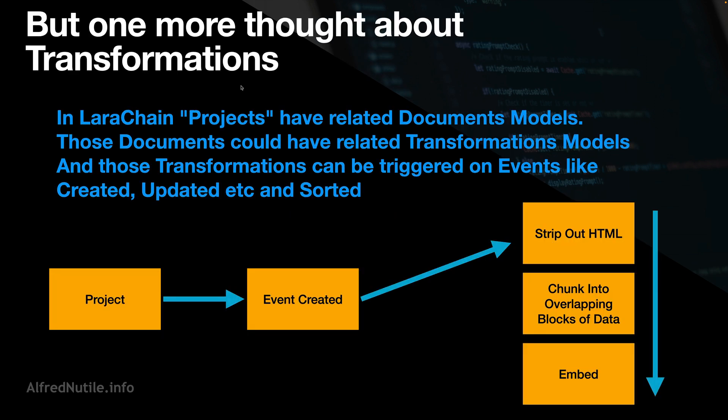One more thought about transformations: there's a model called projects, all under team, so your team has privacy to projects. Those projects, being Eloquent models, make events like 'created,' and then we can just attach transformations in sorting order — they'll do whatever you put there in that order. It's a really nice, clean way with queues and batches to do what you need with the data.